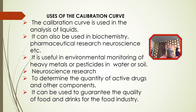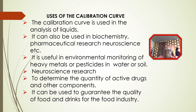What are the uses of the calibration curve? The calibration curve is used in the analysis of lipids, and the areas of application are not limited to analytical chemistry. It can be used in biochemistry, pharmaceutical chemistry, research, or neuroscience, and even in environmental work — for example, the determination of heavy metals or pesticides in water or soil. In neuroscience research it can be used to calculate the concentration of signal chemicals in brain fluid, the quantity of active drugs can be measured in pharmaceutical samples, and it can be used to guarantee the quality of food and drinks for the food industry.